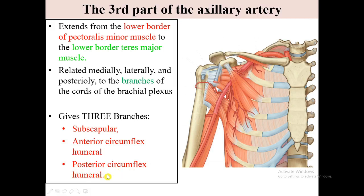The posterior circumflex humeral artery originates from the lateral surface of the third part of the axillary artery, immediately posterior to the origin of the anterior circumflex humeral artery. Together with the axillary nerve, it leaves the axilla by passing through the quadrangular space. It wraps around the surgical neck of the humerus, supplies the surrounding muscles and the glenohumeral joint, and anastomoses with the anterior circumflex humeral artery and branches from the profunda brachii, suprascapular, and thoracoacromial arteries.